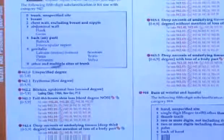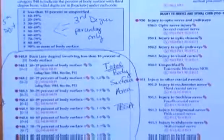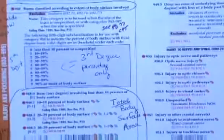But if it's like their whole arm, it's the extent. Not just where and how deep but the extent. So 948 tells that story. So 948 says burns classified according to extent of body surface involved.